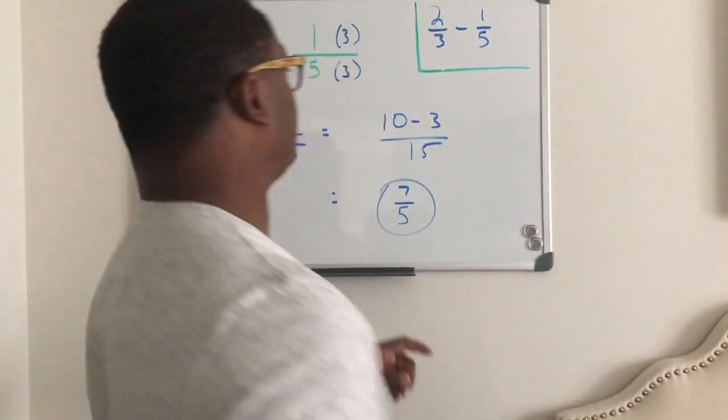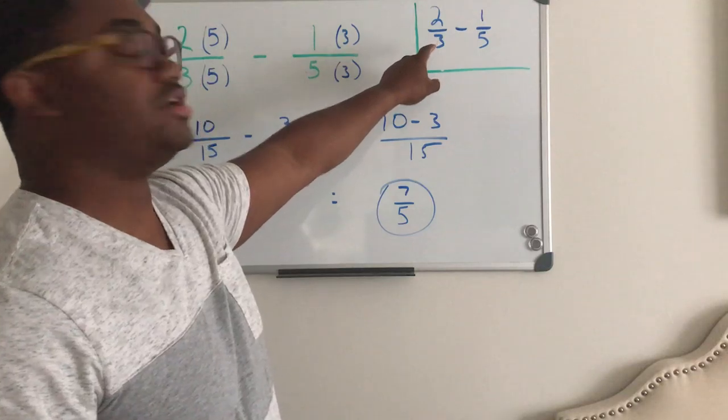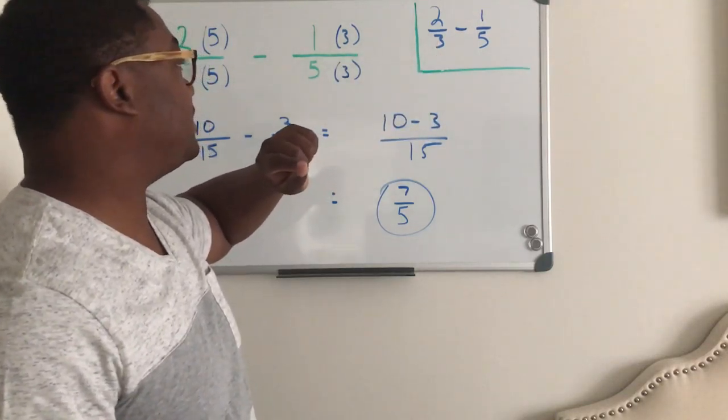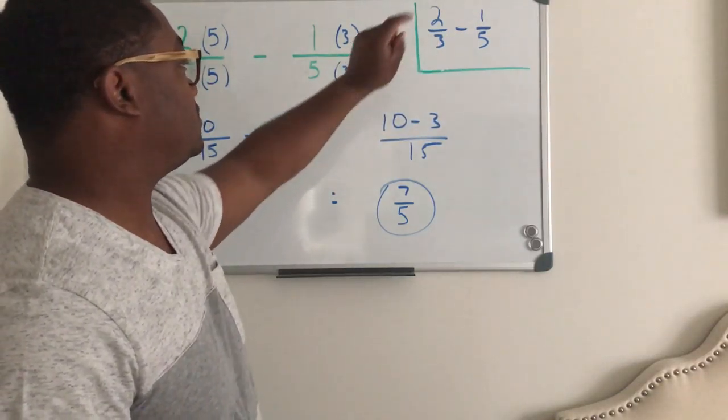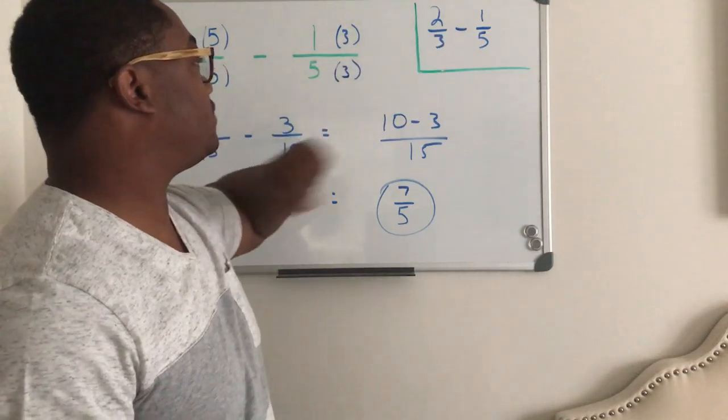Okay, so this is the original problem, and we want to subtract two-thirds minus one-fifth, right?